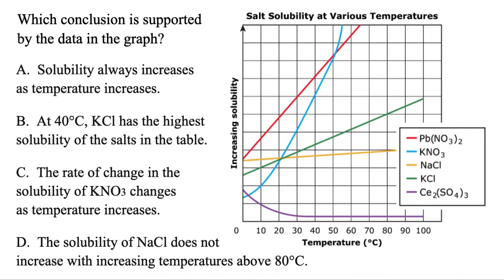Which conclusion is supported by the data in this graph? Option A: solubility always increases as temperature increases. Once again, we've got that strong word 'always.' Temperature increases when you go to the right, solubility increases when the graph goes up, but for the purple one, it actually goes down and decreases — so that's not always true, and A is out.